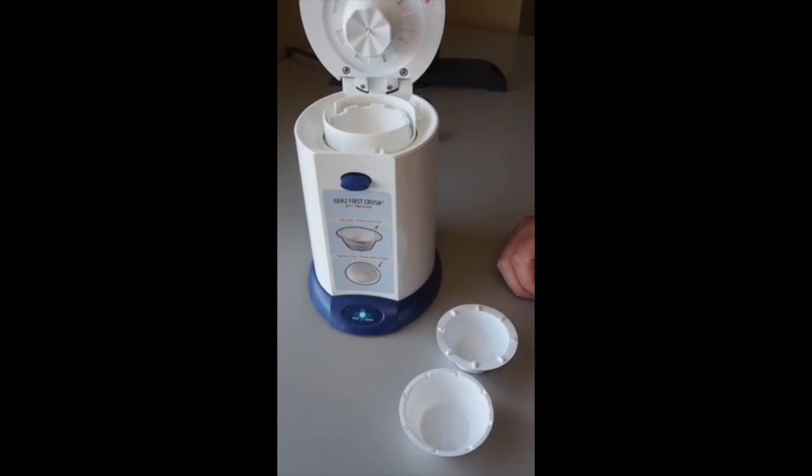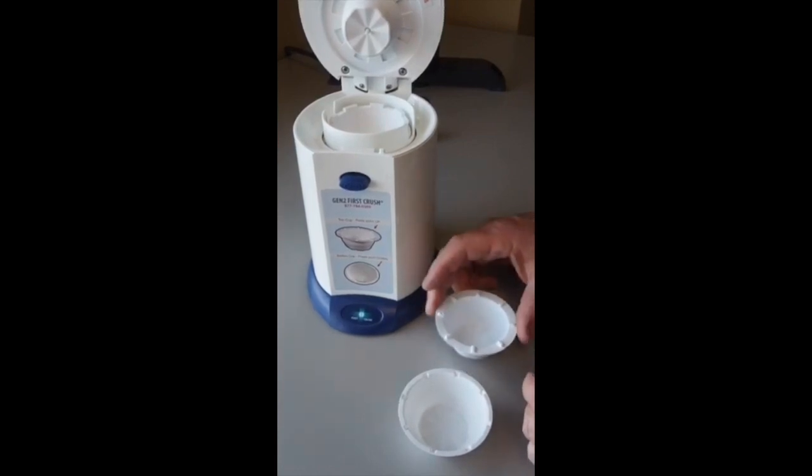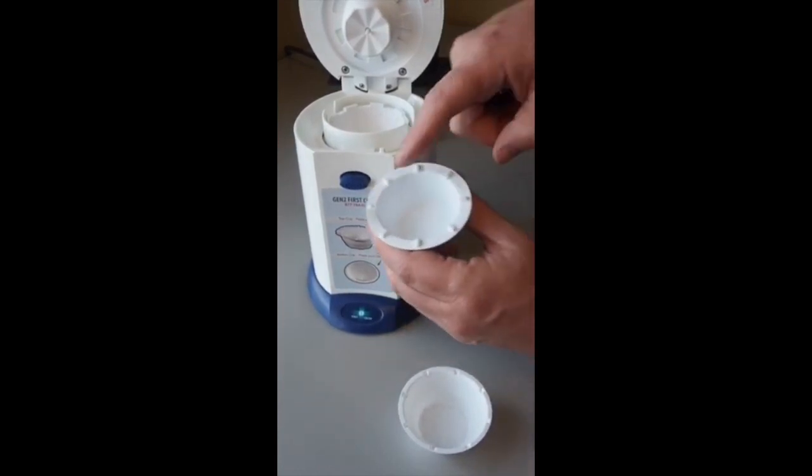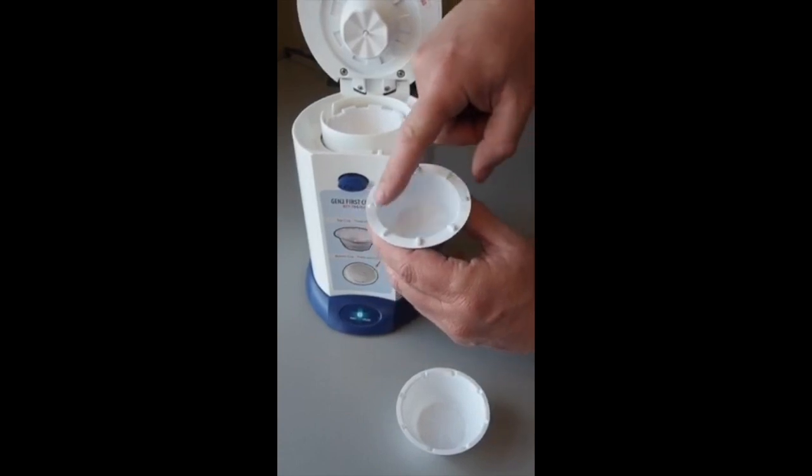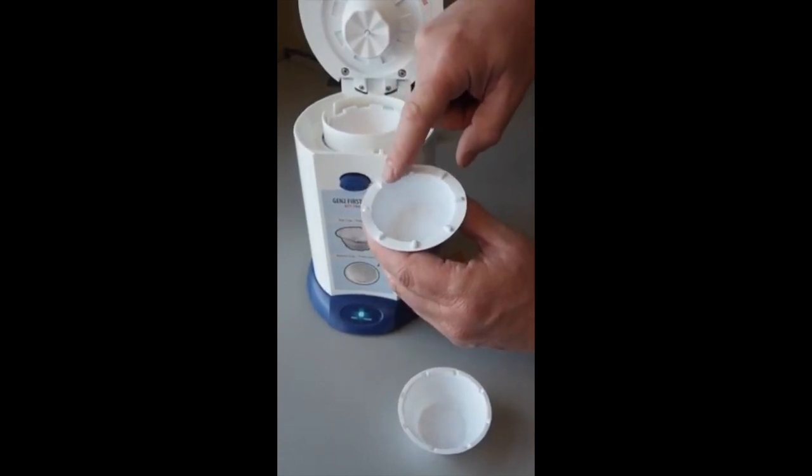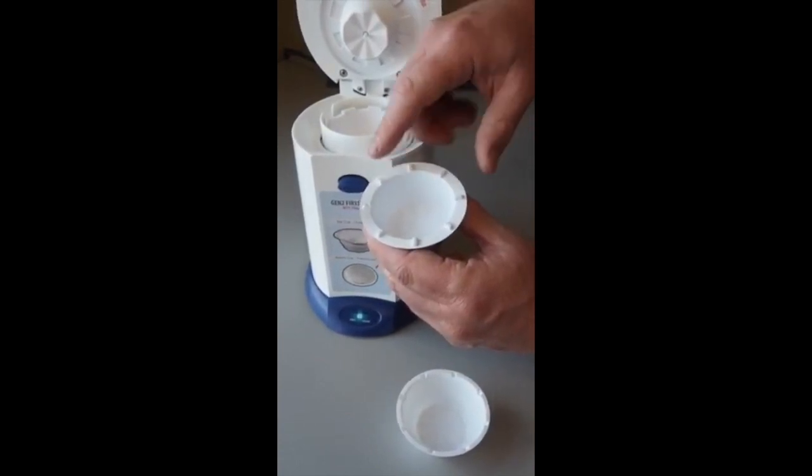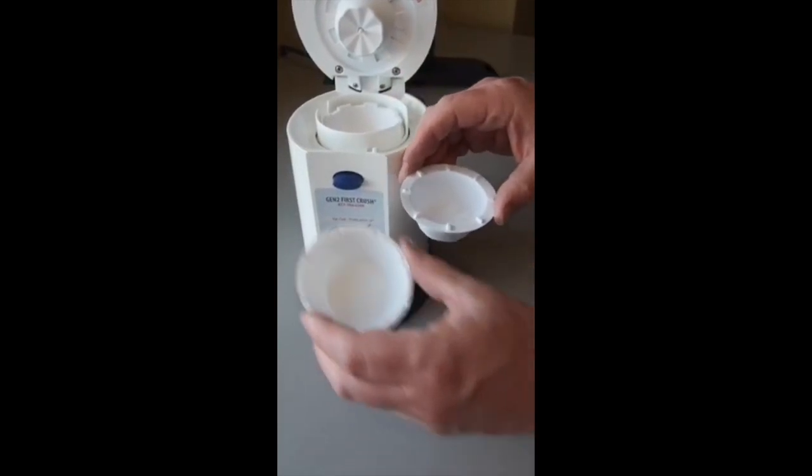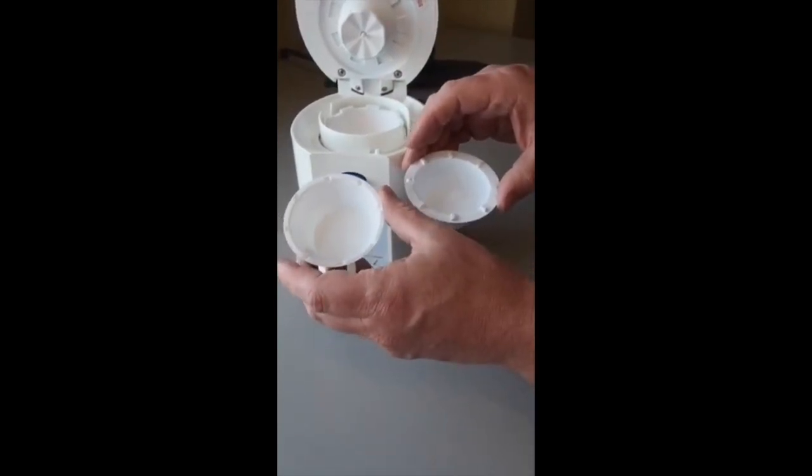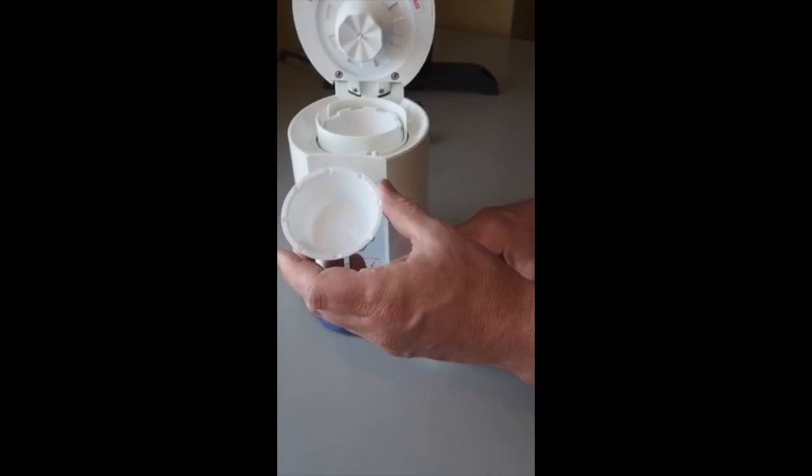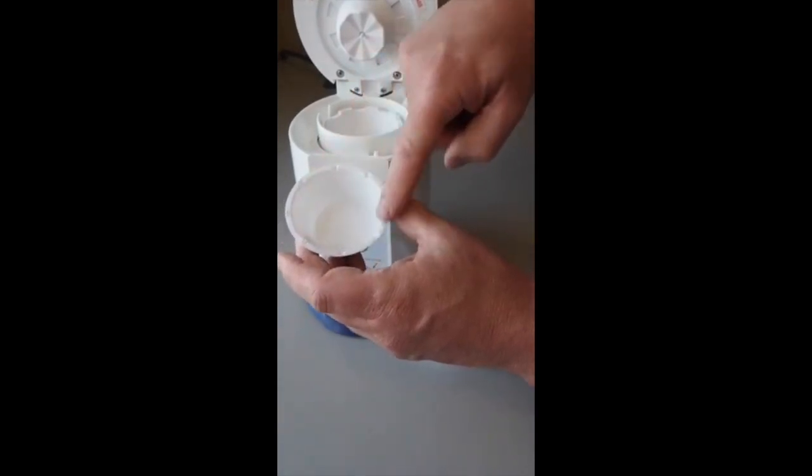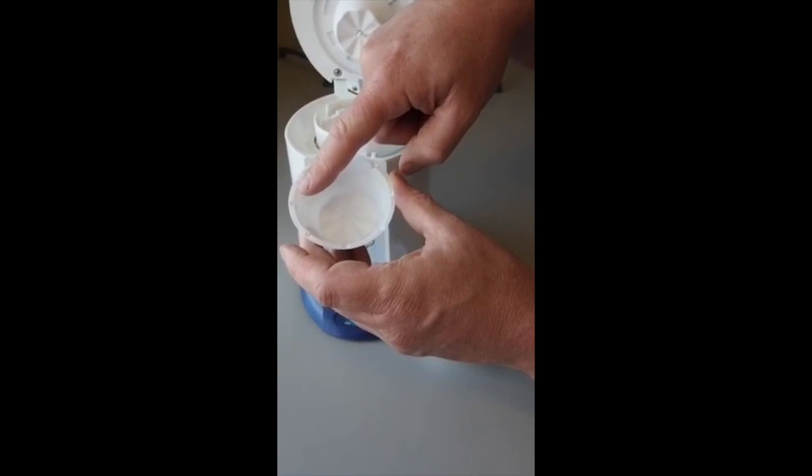One of the biggest differences with the First Crush Automated Pill Crusher is that we use two separate crush cups. This is the top cup, which you can tell because it has little dimples on the upper rim of the cup. And our lower cup, which is used as a serving vehicle to mix your applesauce or pudding with your crushed medication, has the dimples facing down along the rim.